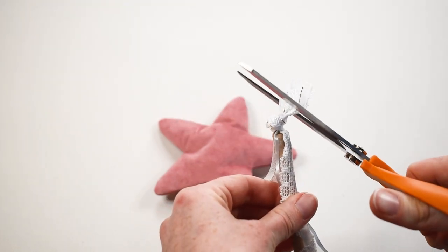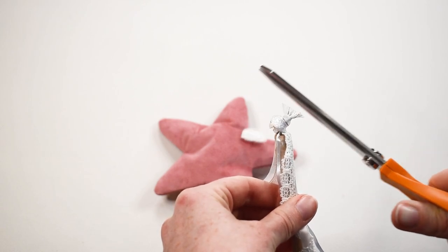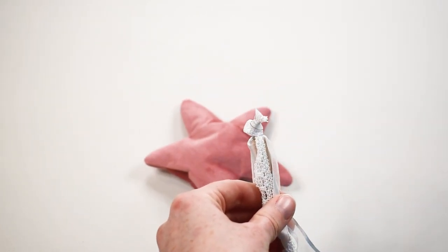Once the dowel is dry, cut off the excess on top of the ribbon and put more glue around the top of the dowel on the outside of the ribbon.